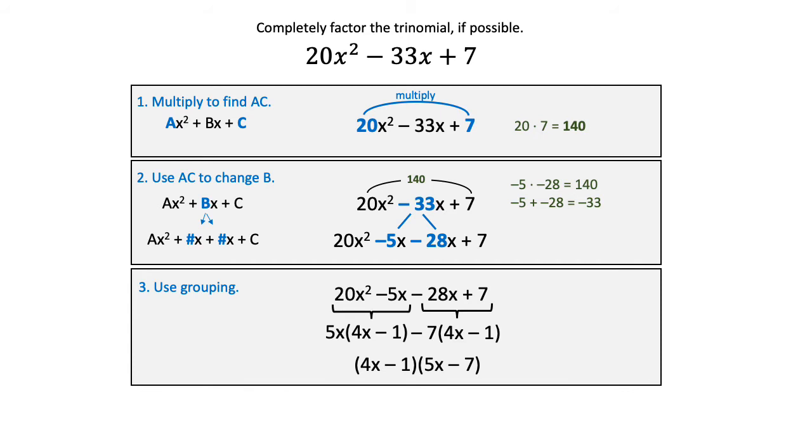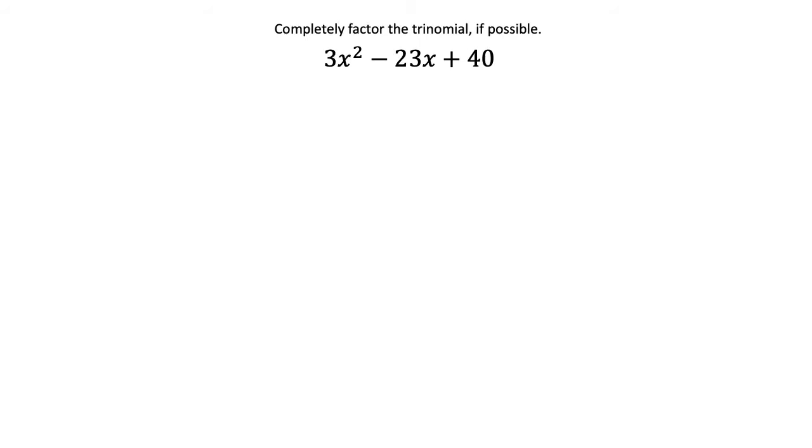So let's look at the process a little bit more in depth. In this example, the first thing we're going to look for is a GCF. Typically there is not one in a problem that you would perform the AC method on, and in this example there is no GCF. 3 and 23 and 40 do not have anything in common.